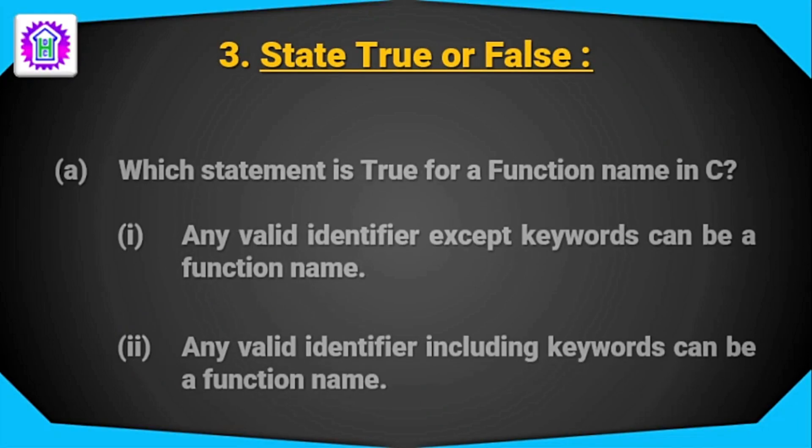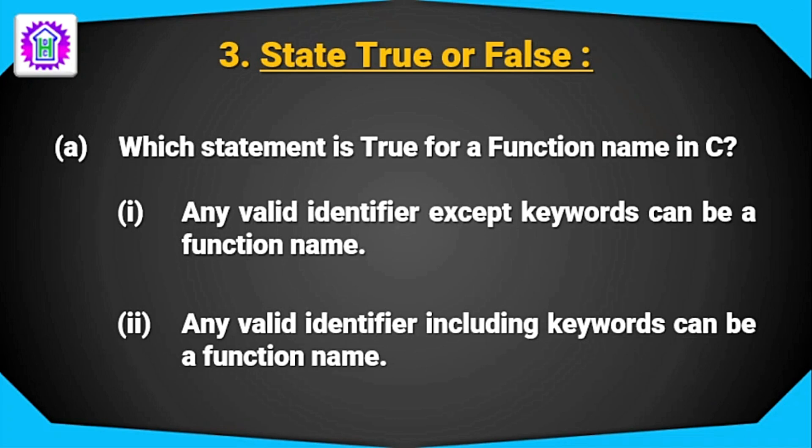Now state true and false. Which statement is true for a function name in C? Any valid identifier except keyword can be function name. It is true. We will still see the next one. Any valid identifier including keyword can be a function name. Keywords cannot be identifier. So the correct option will be option 1 which is true.